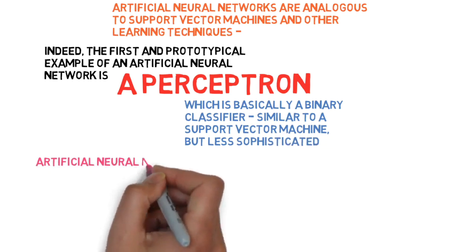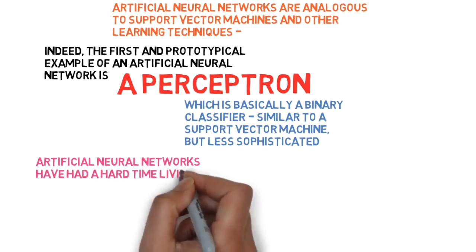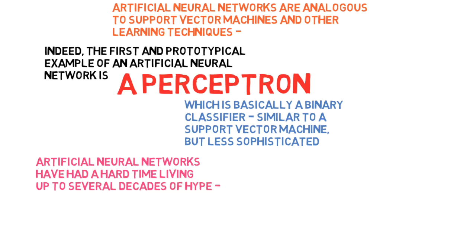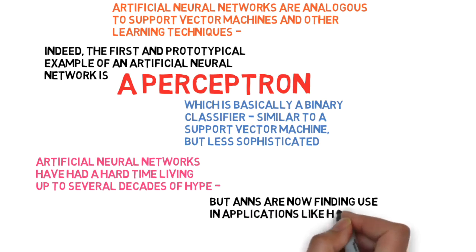Due to this history, artificial networks have had a hard time living up to all the hype. But nowadays, they're finding some applications in problems like handwriting analysis and computer vision.